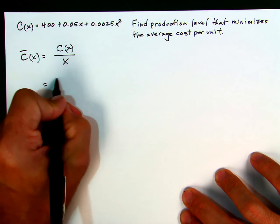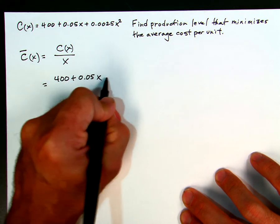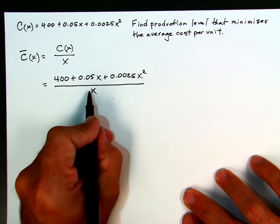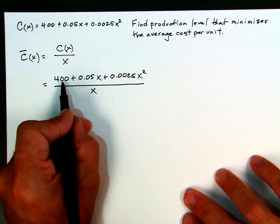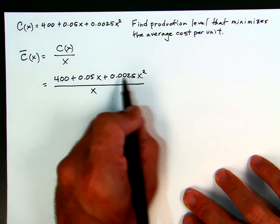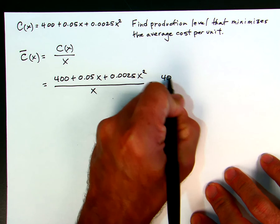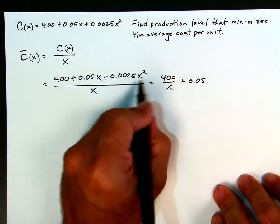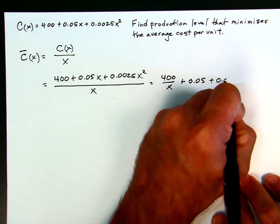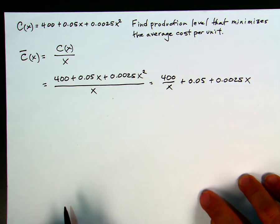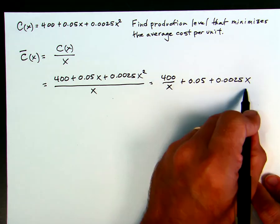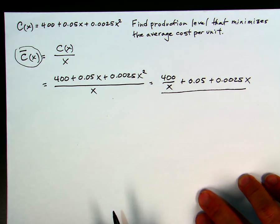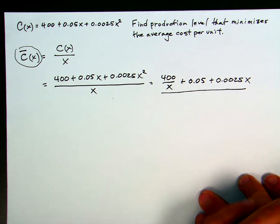So let's first find c-bar of x. It's just taking 400 + 0.05x + 0.0025x² over x. We can separate this into 400/x + 0.05x/x + 0.0025x²/x. We end up with 400/x + 0.05 + 0.0025x. That is our average cost function, and we want to minimize it. Notice that in this case we needed to find this new quantity — the average cost per unit — before we take the derivative to minimize.